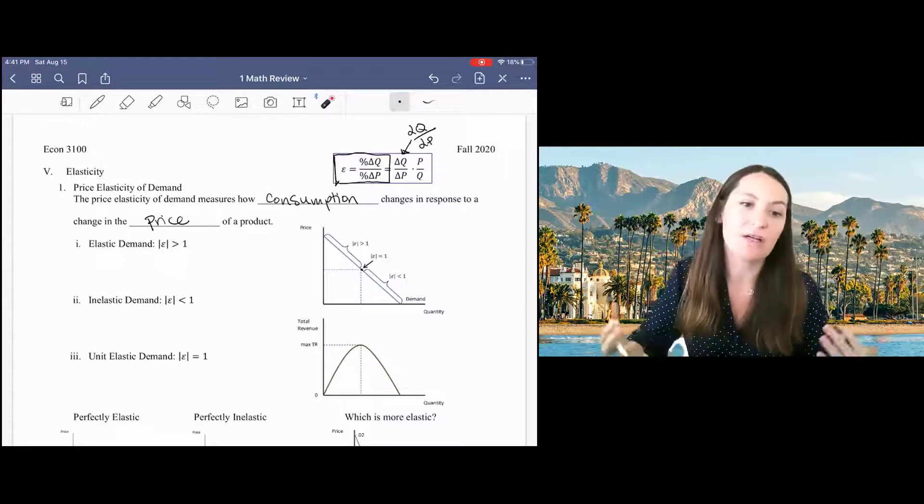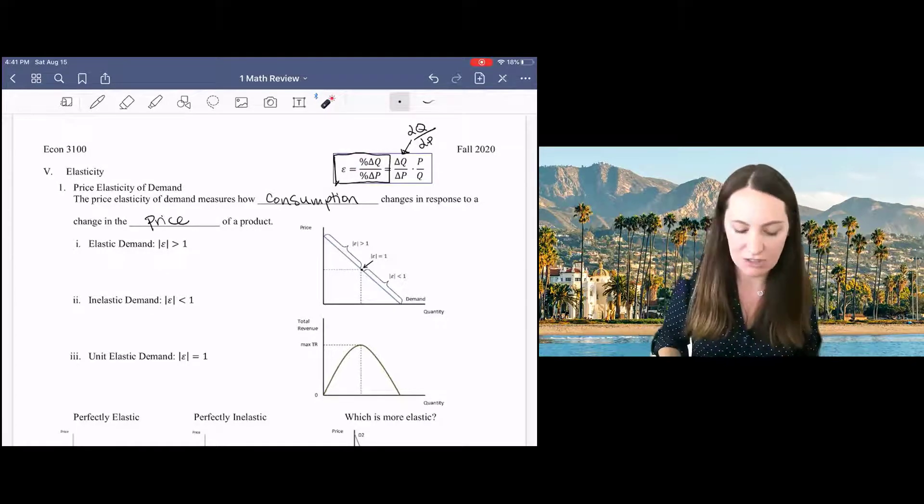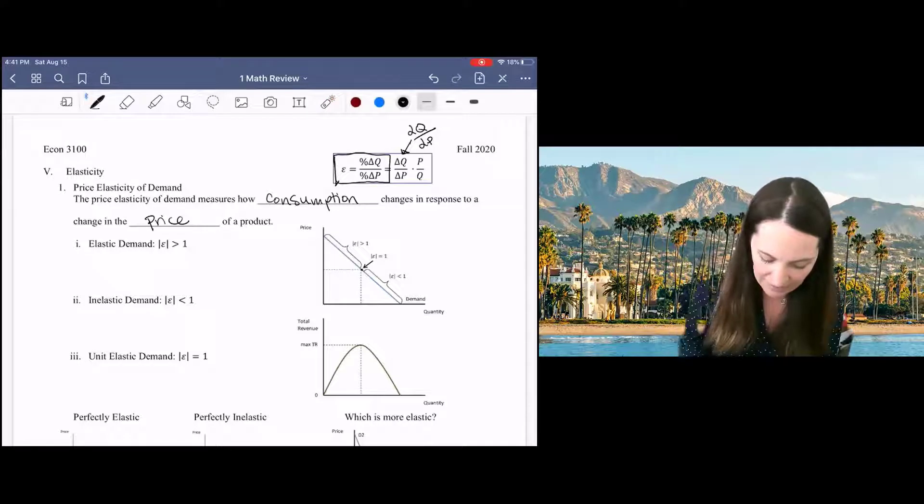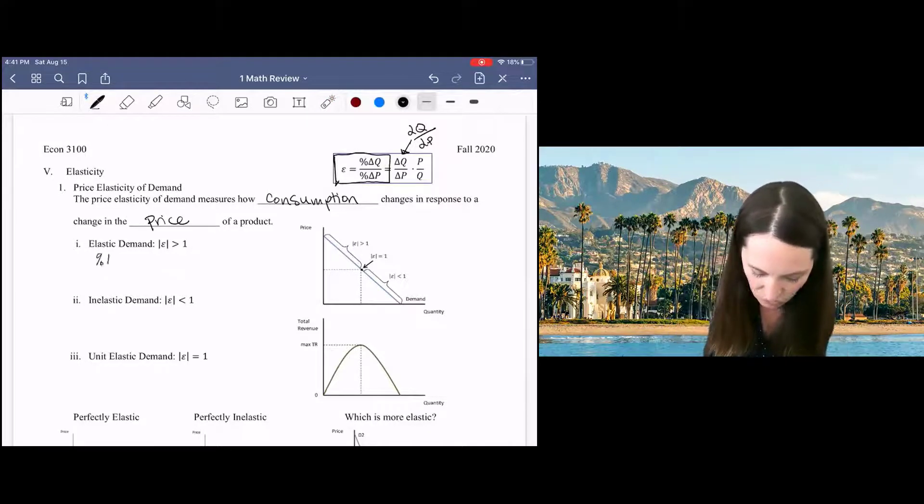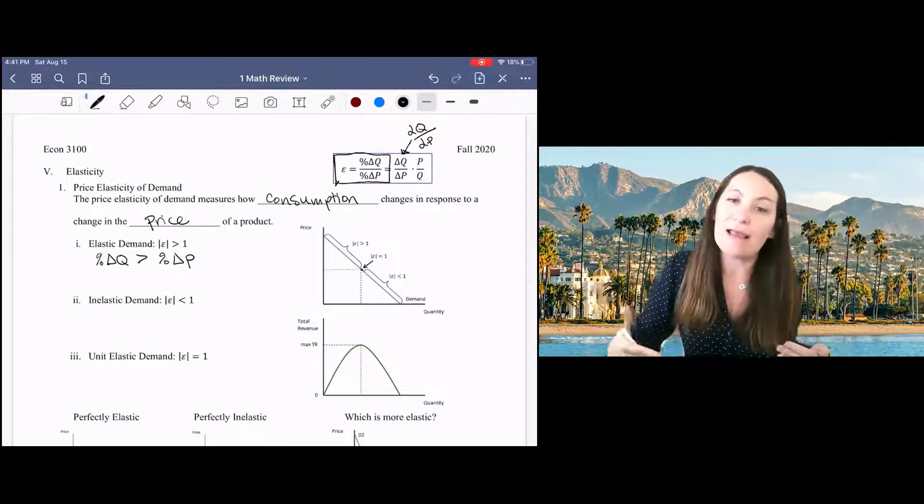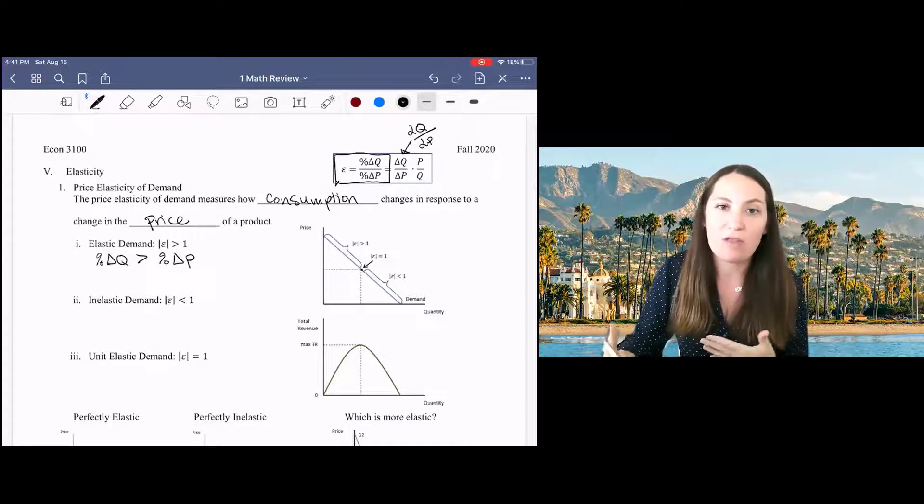People change their consumption a lot when the price changes. So we say that we have elastic demand when our percent change in quantity is bigger than our percent change in price, making that ratio bigger than one.